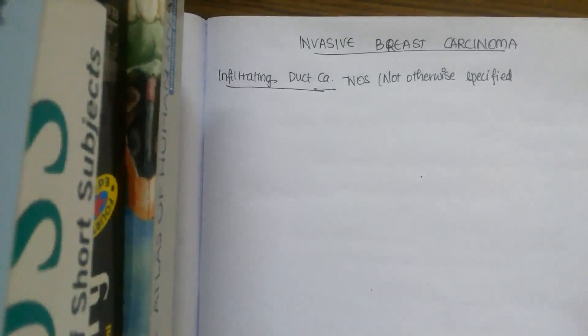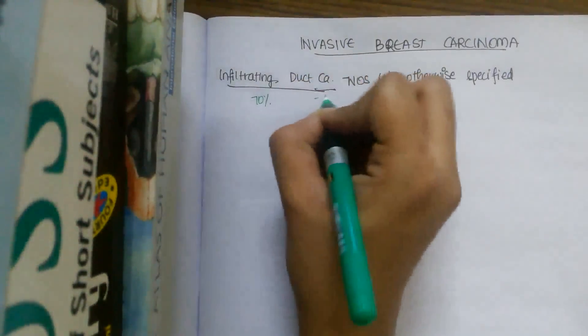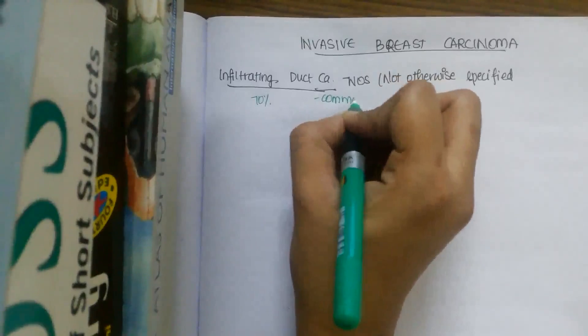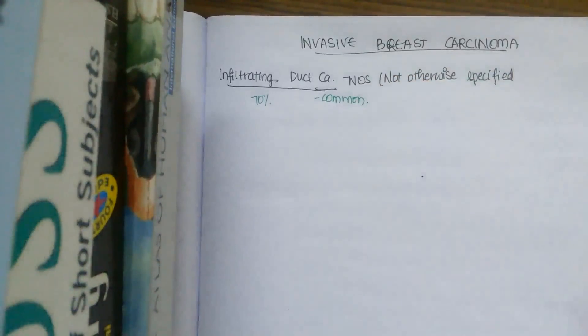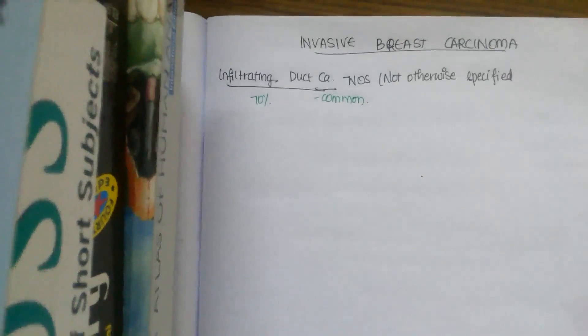So this is the classic carcinoma and it is 70% of carcinoma, the most common type of carcinoma. This carcinoma clinically shows a hard consistency with dense collagenous stroma.